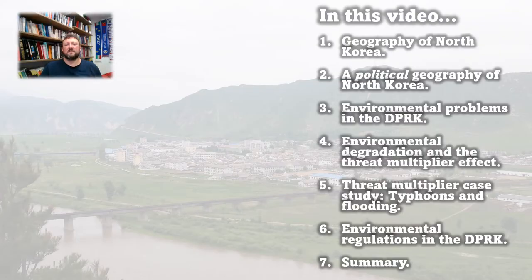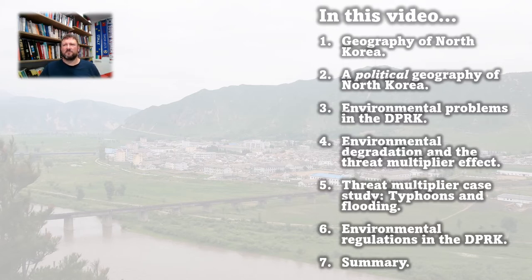In this video, I'm going to start by looking at the geography of North Korea and then introduce the concept of political geography as it applies to the DPRK. I'll then identify some of North Korea's most pressing environmental problems, and then look at environmental degradation and how it relates to something called the threat multiplier effect. I'll look at typhoons and flooding as a threat multiplier case study, and then finish up by looking at the different kinds of environmental regulations that the government has brought in.